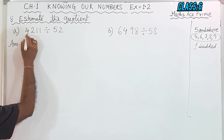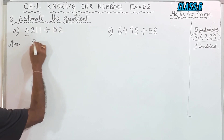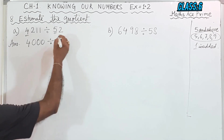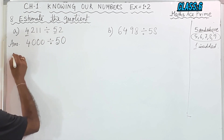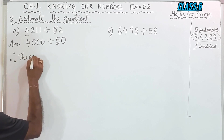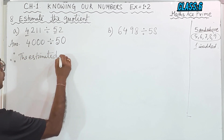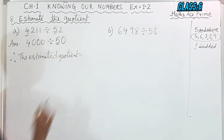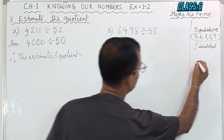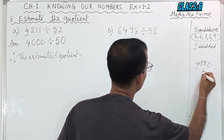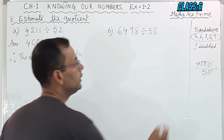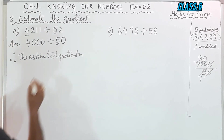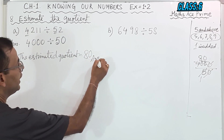So we will round off here. The rest digits I will put 0, and this will be 4,000 only, divided by 52 — I will round off here, so I will put 0 and it will round to 50. Therefore the estimated quotient equals: 4,000 divided by 50. Cancel two zeros: then 5, 1's are 5 and 5, 8's are 40, then 0. So what you get? 80. And this is the answer.